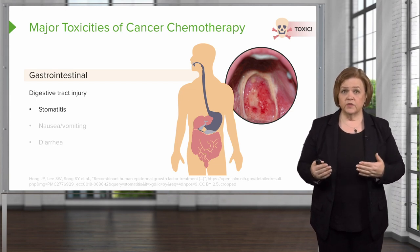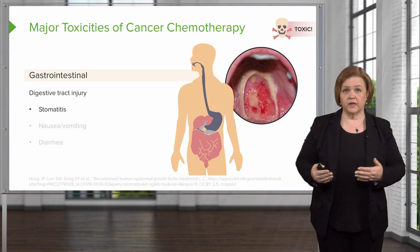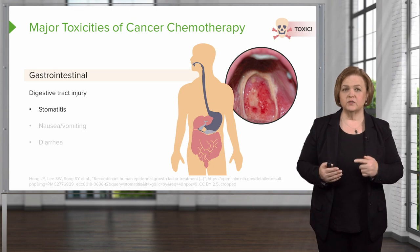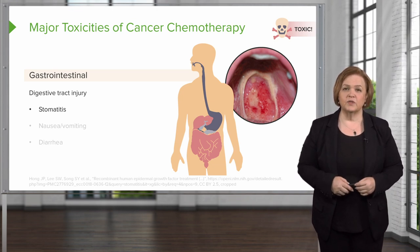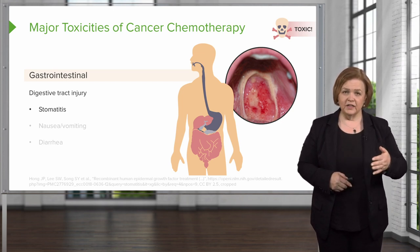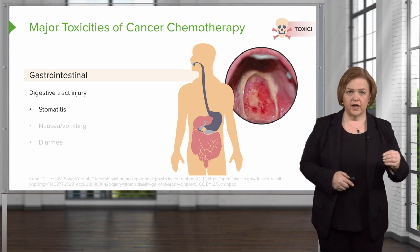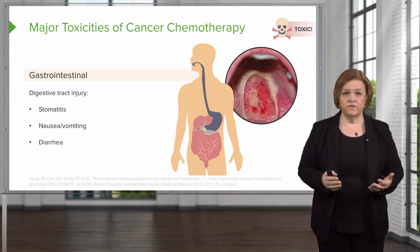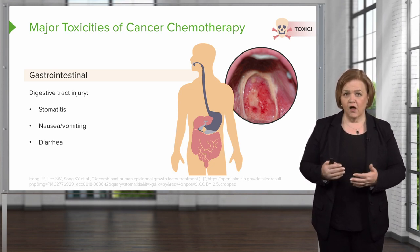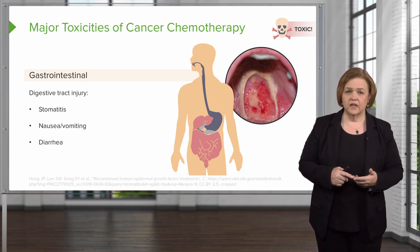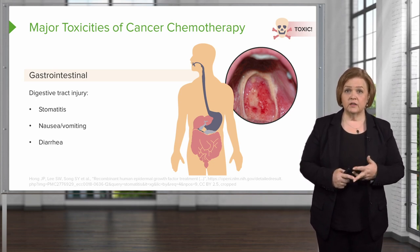Stomatitis is a huge issue because it hurts to swallow their own spit, let alone acidic foods like tomatoes. They're going to stay away from orange juice — those types of things would be like acid on their tongue. We want a patient on chemotherapy to eat because their body needs nourishment to heal. Do you know to assess the patient's mouth for a patient who's on chemotherapy? That's going to be an area where they could test you.